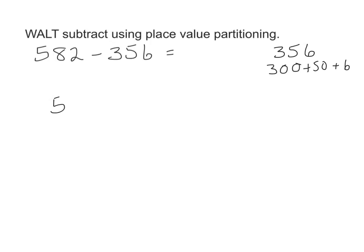So, 582, and we're just going to subtract all of those pieces in turn, or partitions in turn. We're going to take off the 300 first, giving us a subtotal—and I say subtotal because we haven't reached our final total—of 282.